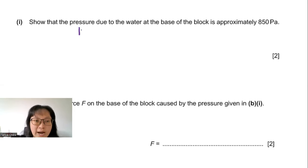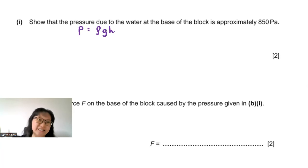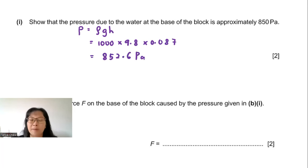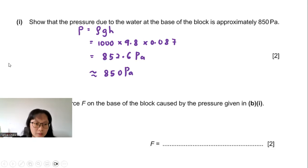Using p = ρgh, where ρ is the density of water, g is gravitational acceleration, and h is the depth: 1000 × 9.8 × 0.087 = 852.6 Pa. This is four significant figures, so rounding to 850 Pa gives the required answer.